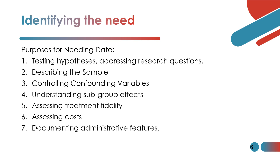We also need to control confounding variables, and this is very important in quantitative research because we want to eliminate all biases. We also need to understand subgroup effects, assess treatment fidelity, look at the cost especially regarding the financial aspects of our research, and document administrative features such as contact addresses.